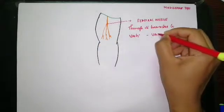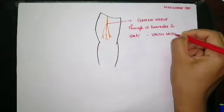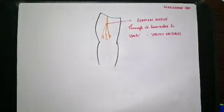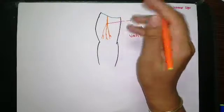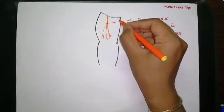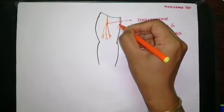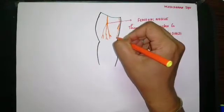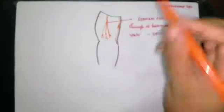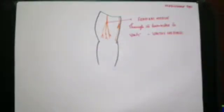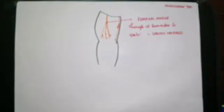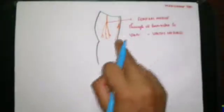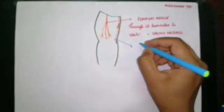The nerve of the medial compartment is the obturator nerve. The obturator nerve has an anterior and posterior division. It is the posterior division of the obturator nerve that gives out a branch to the knee joint. So there is a branch from the posterior division of the obturator nerve which supplies the knee joint — the obturator nerve supplies the knee joint through its posterior division.